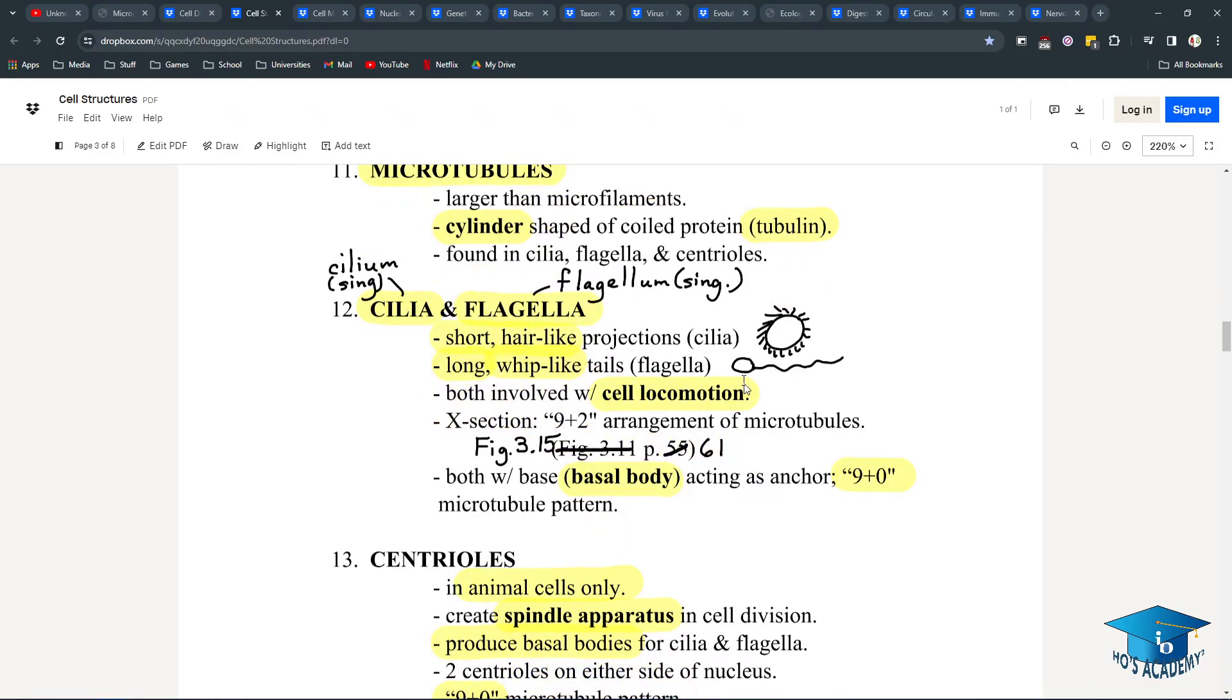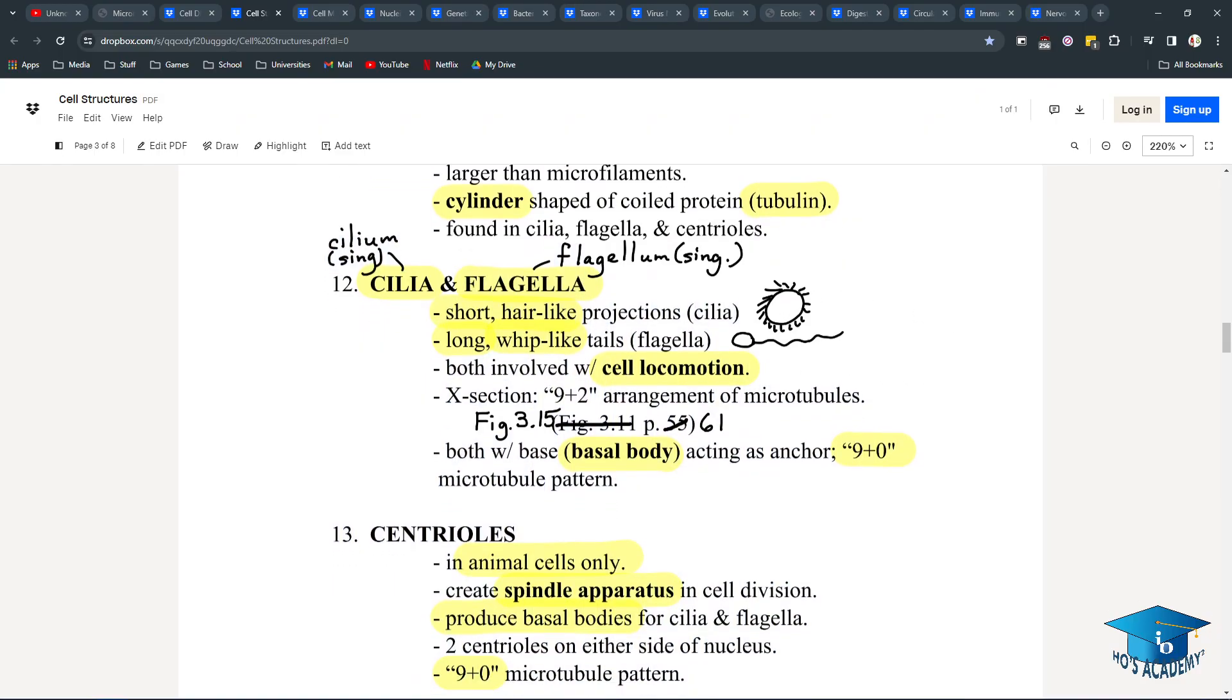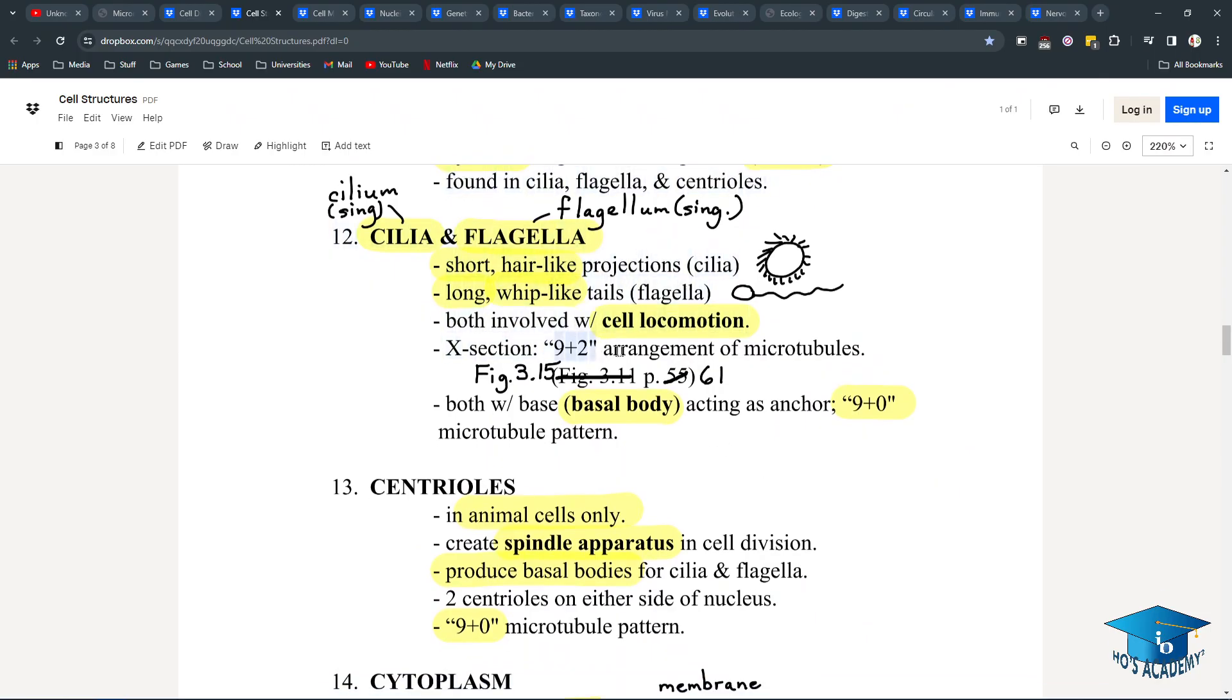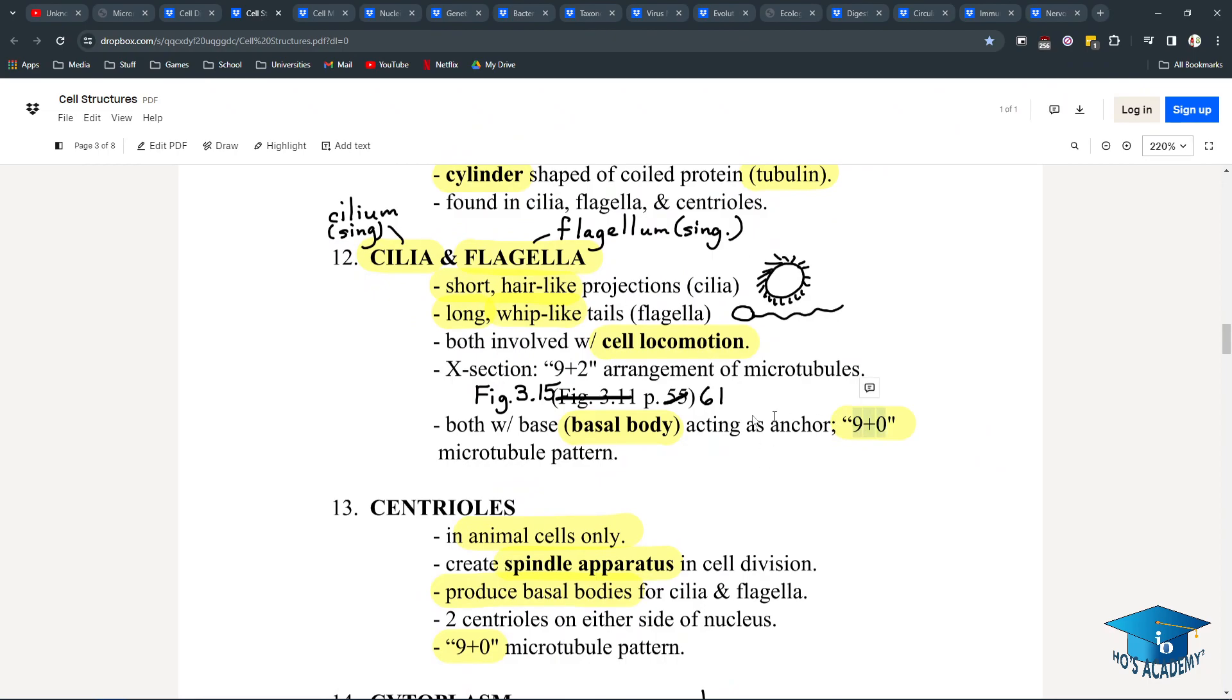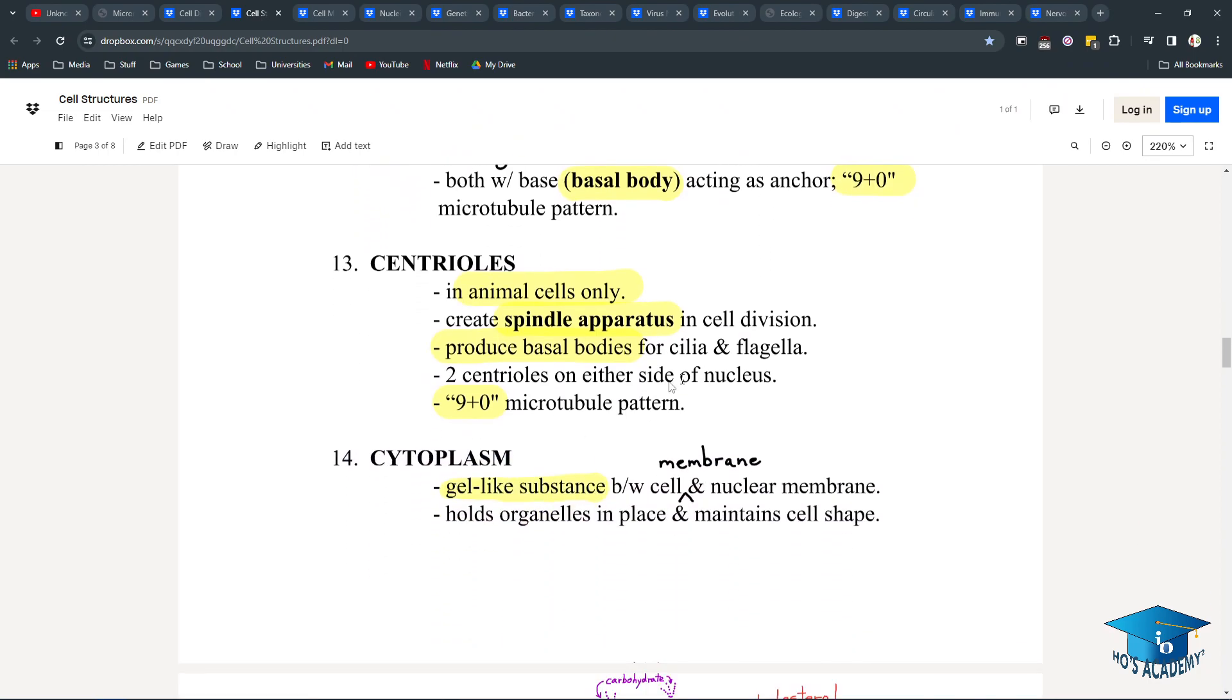Cilia and flagella are usually in eukaryotes. They're used for movement, cell locomotion, and they have the 9 plus 2 arrangement of microtubules. And the base, where it's closest to the cell, would have the 9 plus 0 basal body. Centrioles create spindle apparatus in cell division, and yes, they do have the 9 plus 0 microtubule pattern. There's two on either side, like the pole. If you think about anaphase, where they have to be pulled away from the middle to the sides, what's making those spindle fibers is centrioles.